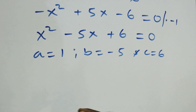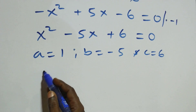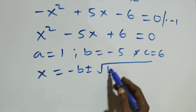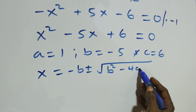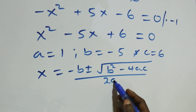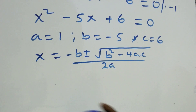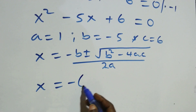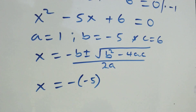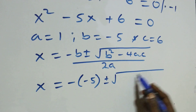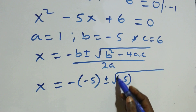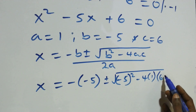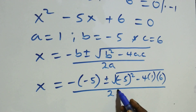In this quadratic equation, a equals one, b equals minus five, and c equals six. Using the quadratic formula: x equals minus b plus or minus square root of b squared minus four ac, all over two a.